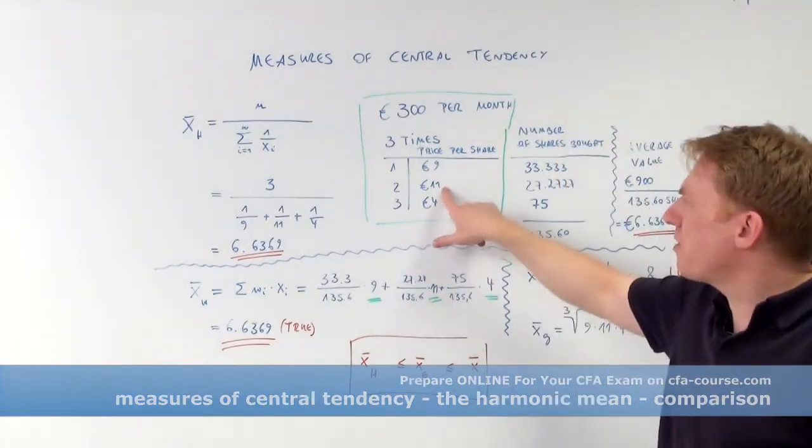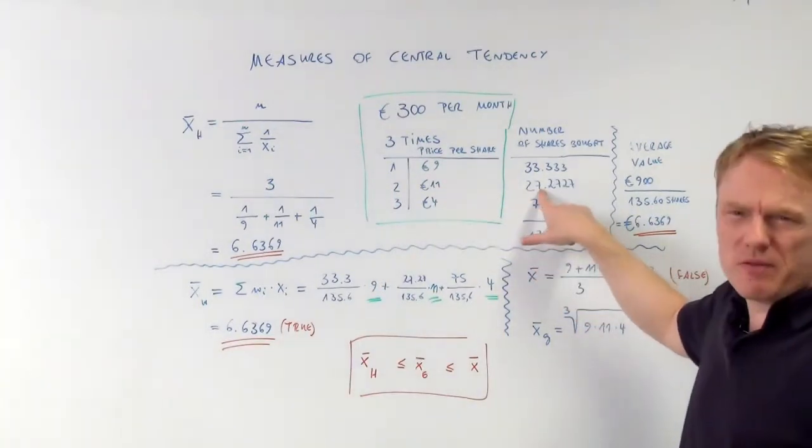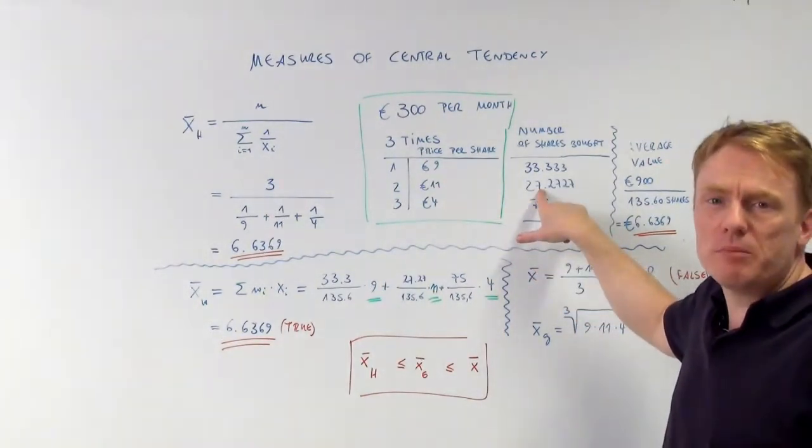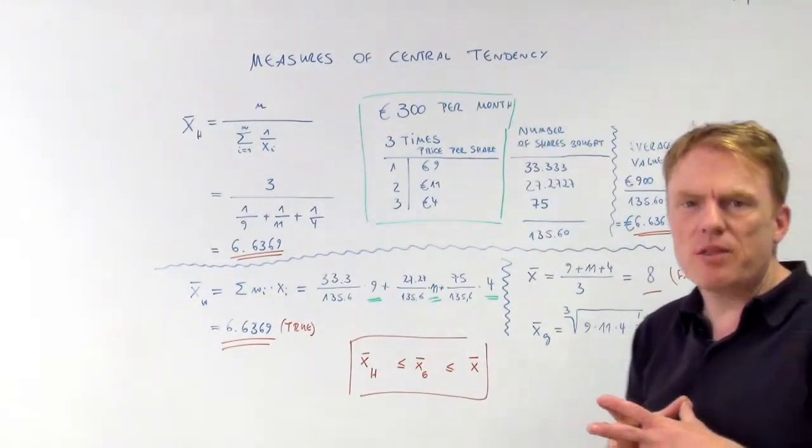In the second month, if the share cost is 11 euros per share, it's 27.27 shares that we can possibly buy in the second month and 75 shares in the third month.